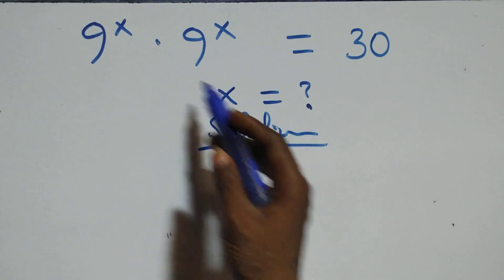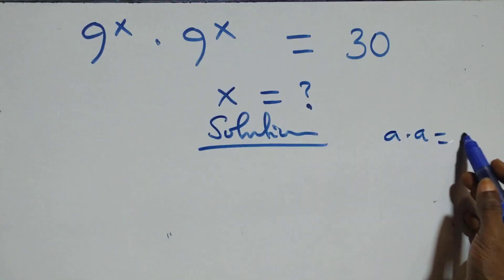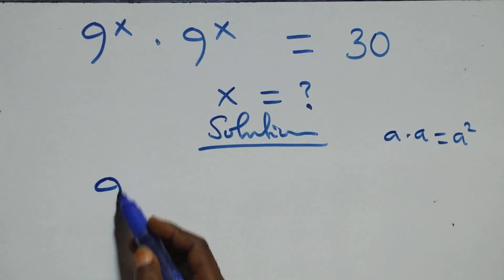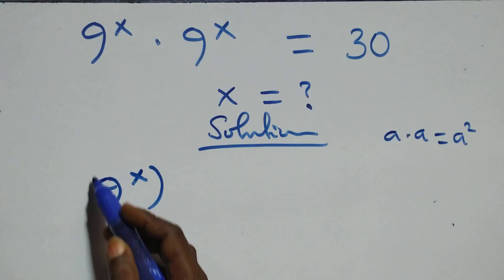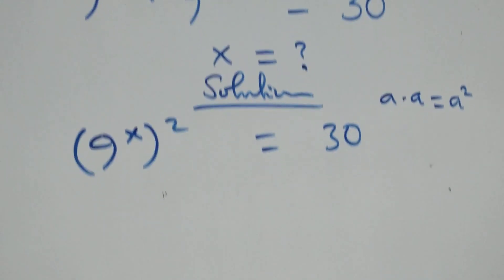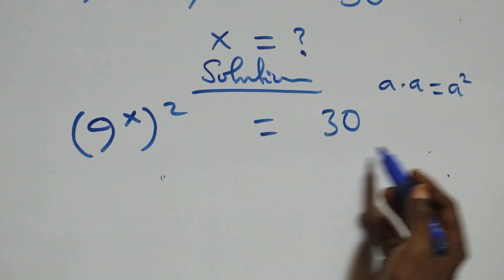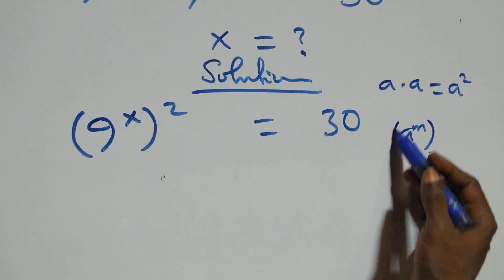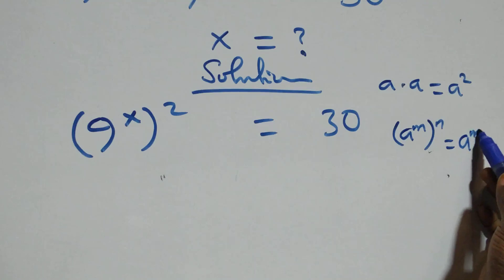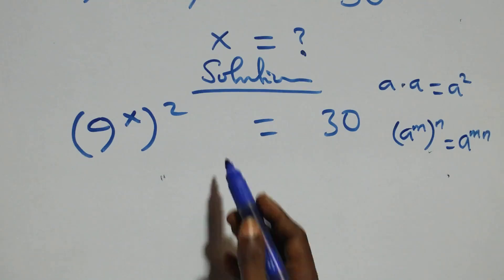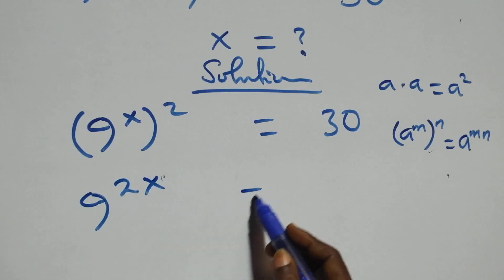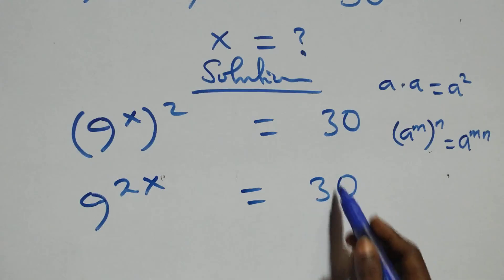What we have here: when we have a times a, this is written as a squared. So multiplying here, we have 9 raised to power x, all squared, equals 30. This follows the rule a raised to power n, raised to power n, equals a raised to power n×n — the powers multiply — and we get 9 raised to power 2x equals 30.